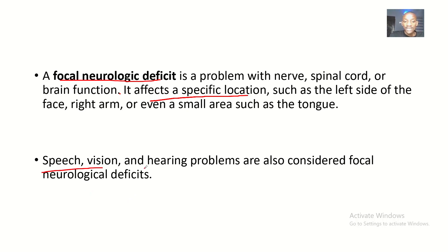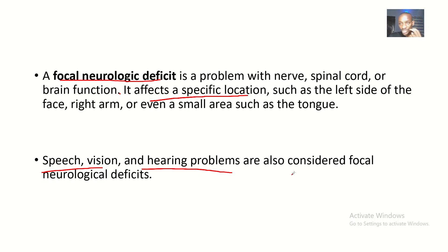Speech, vision, and hearing problems are also considered focal neurological deficits. If you have problems with speech, this can be traced back to the nerves that supply the muscles of the tongue. If you have problems with vision, this can be traced back to the optic nerve, or to the nerves that supply the muscles controlling the eye — the lateral rectus, medial rectus, superior oblique, and inferior oblique muscles.